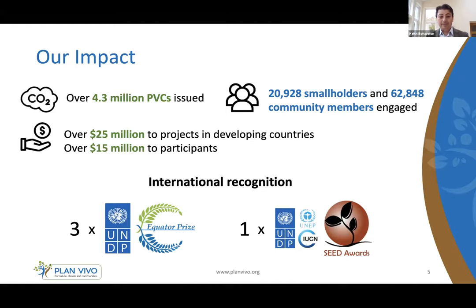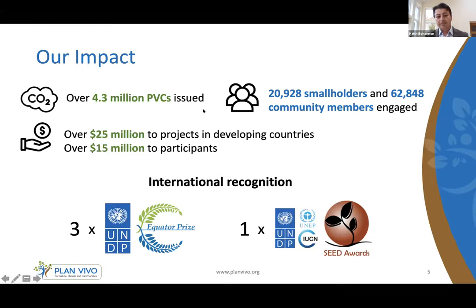We're not just about numbers. Our projects have had international recognition — three have won the UN Equator Prize: Yeda Valley in Tanzania, Makoka Pamoja in Kenya, and Laurel Valley in Vanuatu. The Trees for Global Benefits Project in Uganda has also won the UN Seed Award. That speaks to the impact and quality of the work done by our project partners on the ground, and that's really the essence of what we're trying to do with the Plan Vivo network.